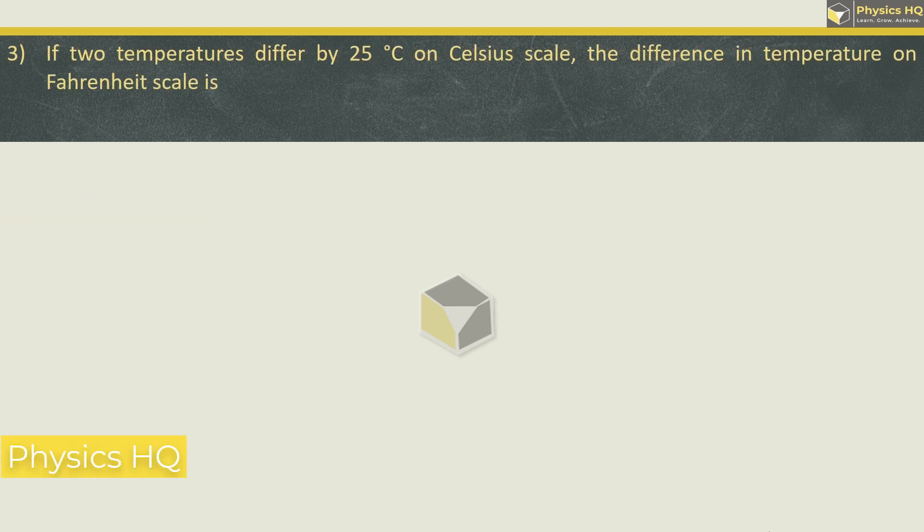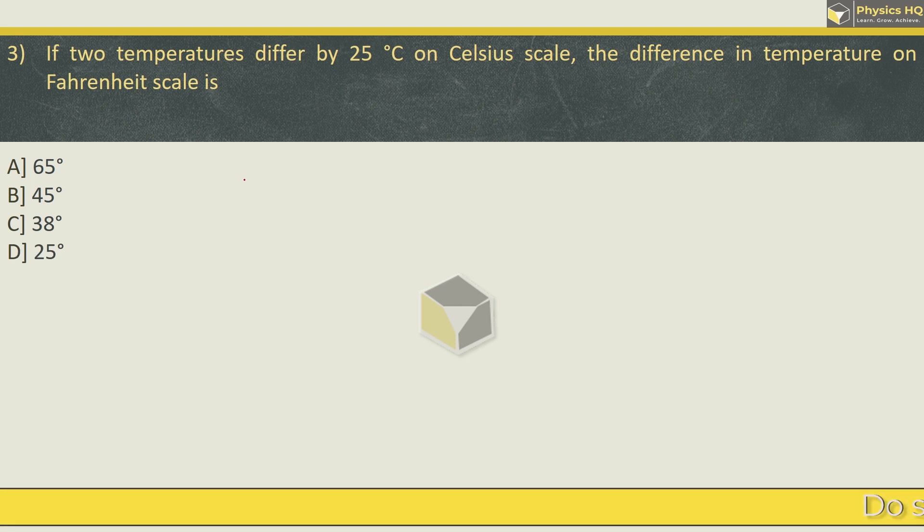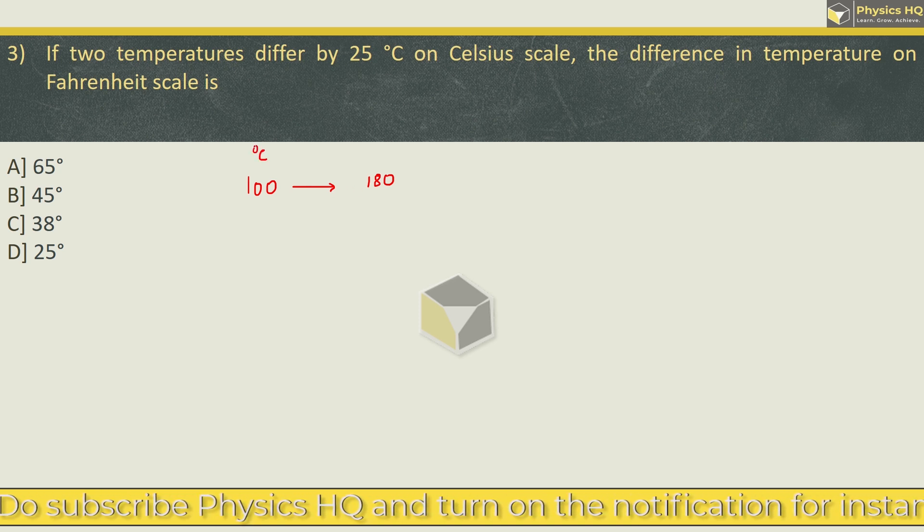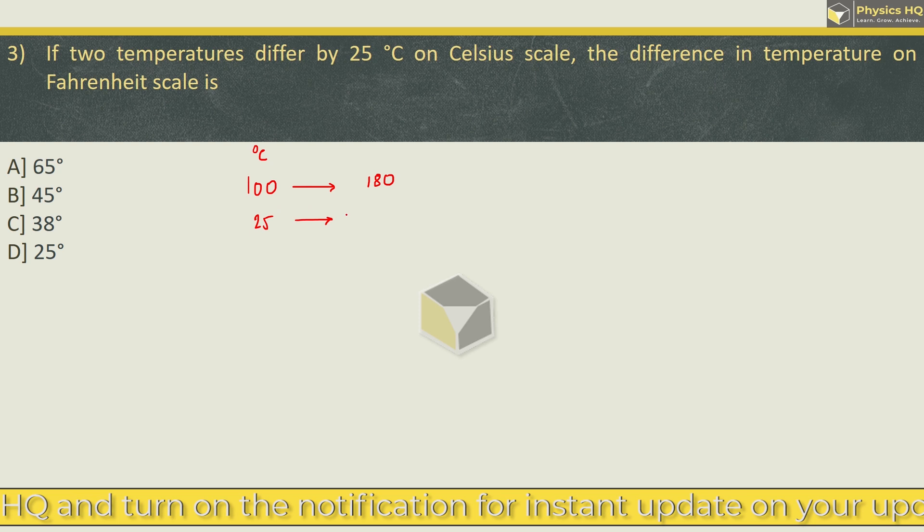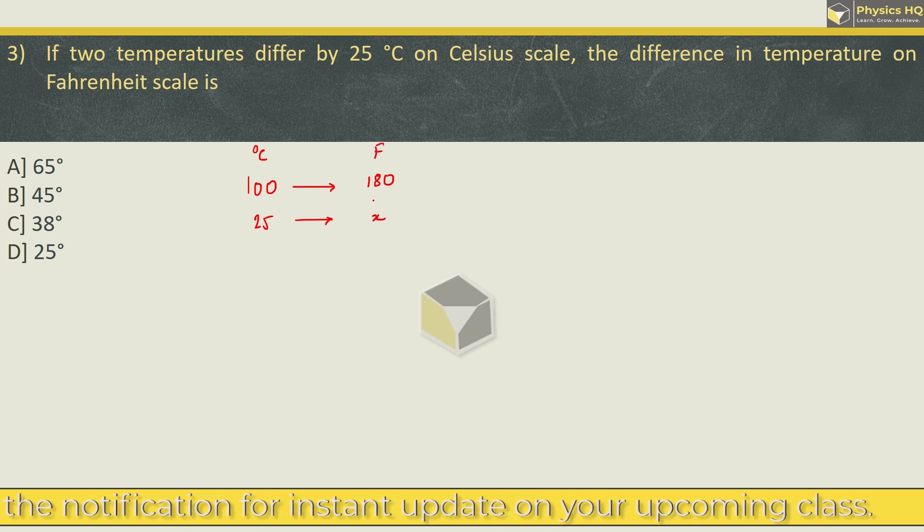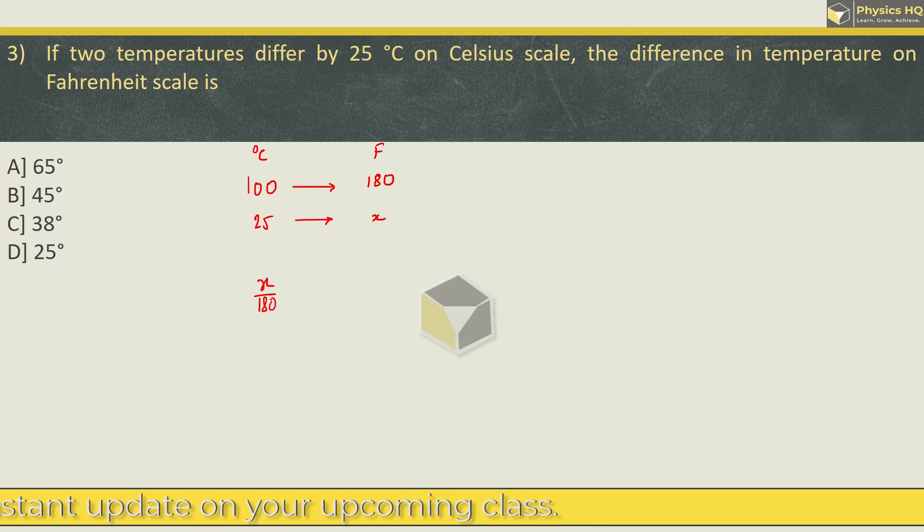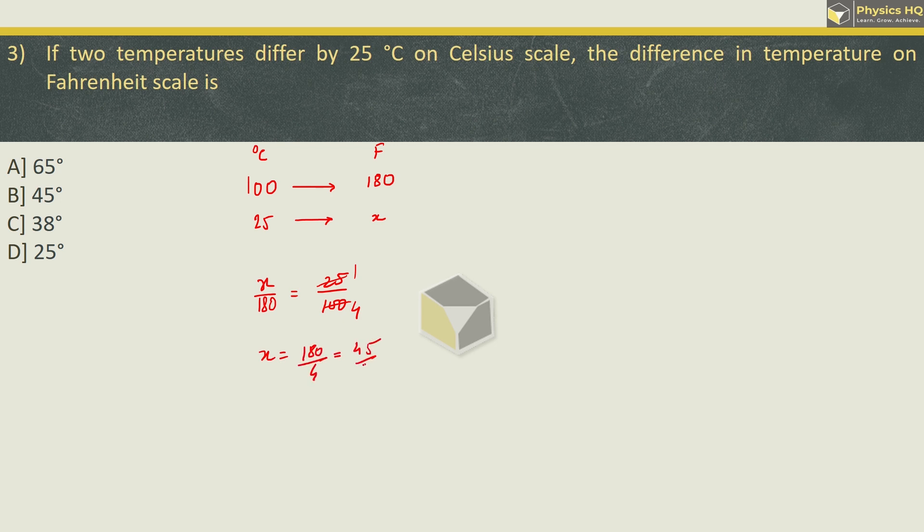Next MCQ: If two temperatures differ by 25 degree Celsius on the Celsius scale, the difference in temperature on the Fahrenheit scale is how much? Options are 65 degree, 45 degree, 38 degree, or 25 degree. Here we have a basic understanding: if the temperature difference is 100 degree Celsius, on the Fahrenheit scale the temperature difference is 180 degree. Here, the change on the Celsius scale is 25. We can take ratio: x/180 = 25/100. So this is 1/4, so you get x = 180/4, which comes out to be 45. The change on the Fahrenheit scale will be 45.